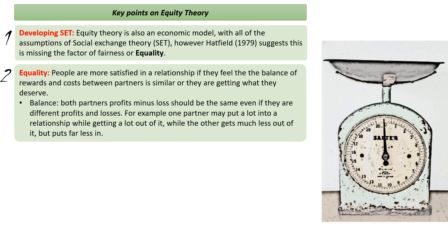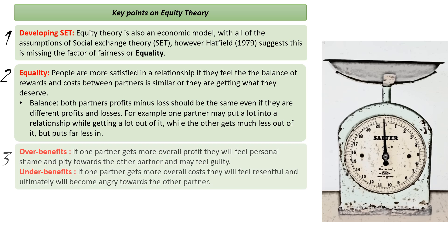For example, a couple may be perfectly happy if one partner doesn't help with housework but is very good with finances or the children. Or one partner might put a lot in and get a lot out, while the other puts less in and gets less out — and the relationship remains stable because overall profit and loss is similar for both. However, equity theory also addresses over-benefits and under-benefits. Even the over-benefiting partner — getting more profit — won't be happy because they feel shame and guilt toward the other person. The under-benefiting partner can feel resentful and angry that the other isn't pulling their weight.